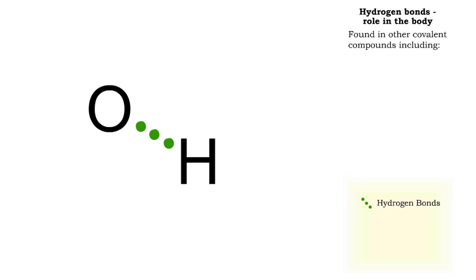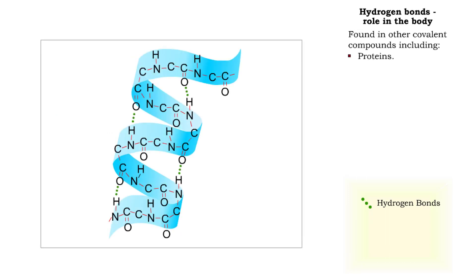Hydrogen bonds are found in other covalent compounds. Part of the structure of a protein molecule is maintained by hydrogen bonds between adjacent sections of that molecule.